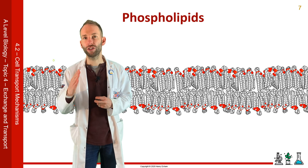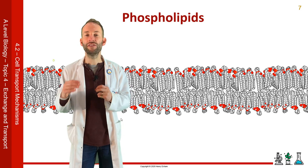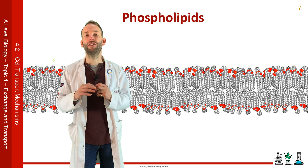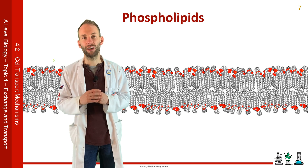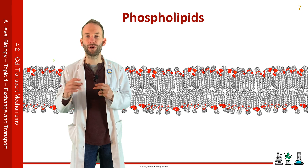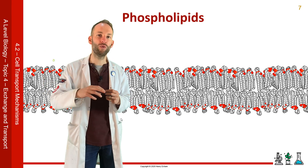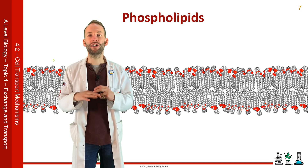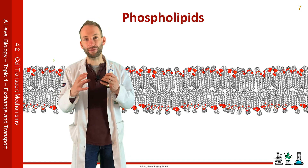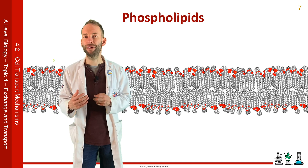These phospholipids are not bound to each other. There are no bonds between them holding them in these positions. They're just there because of this property — because they're doing whatever they can for the tails to avoid the water. But this gives membranes a really interesting fluid property because phospholipids can be pulled out and you can add more in, so you can change the shape and size of membranes very easily, which is really important when it comes to cell division and creating new cells.